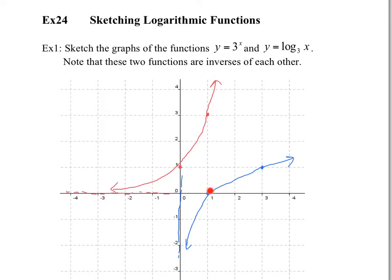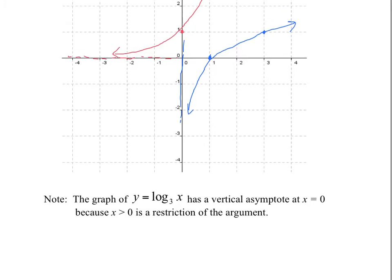Also, we're always going to pass by the point (1,0), because think about it — if every exponential function passes by (0,1), every log function will pass by (1,0). The graph of y equals log base 3 of x has a vertical asymptote at x equals 0, right here. The reason for that is we have a restriction on the argument: the argument has to be positive and cannot be 0. So the domain of this function is x is greater than 0.